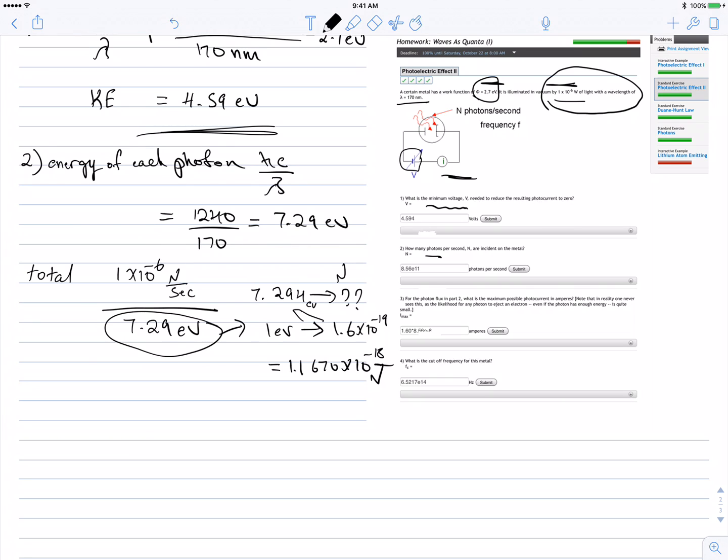When we divide this number, take it out and put this instead. 1.167 times 10 to the negative 18, and then I got an answer of 8.56 times 10 to the 11 photons per second.